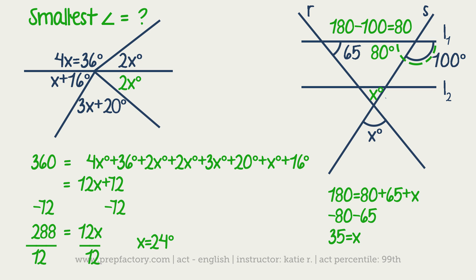This is where asking yourself if you're fully done with the problem really pays off, because it didn't say what is X like it does most of the time, it said what is the smallest angle. So in order to find the smallest angle, we're going to have to determine, looking up at this picture, is it 2X or is it X plus 16?